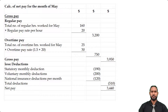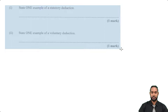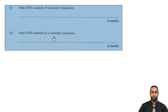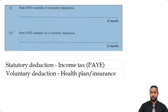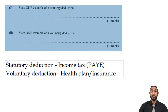There's one small part left — part B asks us to state one example of a statutory deduction and one example of a voluntary deduction, one mark each. For statutory I put income tax or PAYE. Statutory means it is mandated by law — in Trinidad you also pay a health surcharge of about $8.25 per week. For voluntary deductions: health plans, insurance, personal pension plans, that sort of stuff.